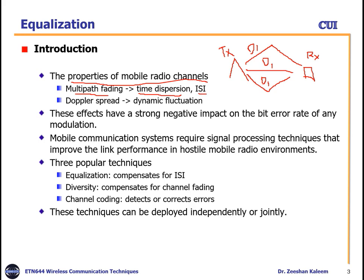Due to time dispersion there is inter-symbol interference (ISI). For example, the first data D1 arrives at the receiver at different time instants from different paths, interfering with the next symbol D2. Another effect of the radio channel is Doppler spread — when either the transmitter or receiver moves, it causes fluctuations in the channel. These effects have a strong negative impact on the bit error rate of any modulation scheme.